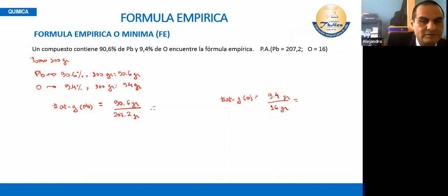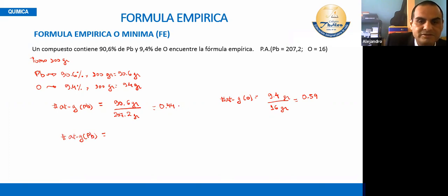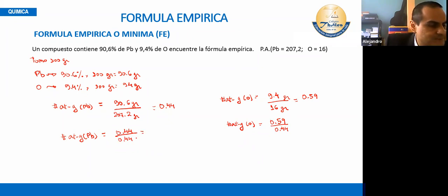Operando eso, el número de átomos gramos del plomo me sale 0.44, y el del oxígeno me sale 0.59. Para darle uniformidad, lo que hay que hacer es dividirlo entre el menor de ellos. El menor es 0.44. Entonces: plomo = 0.44 ÷ 0.44 = 1; oxígeno = 0.59 ÷ 0.44 = 1.34.